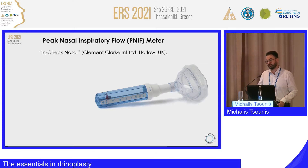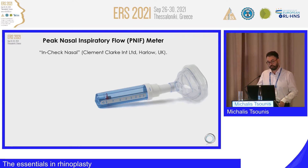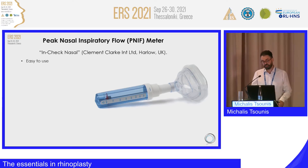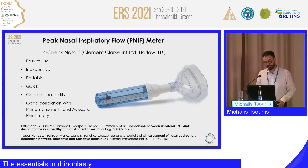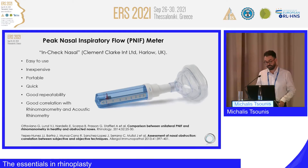Another device, less impressive but with important advantages, is the peak nasal inspiratory flow meter. It is very easy to use, cheap (about 35 pounds in the UK), portable, quick, and has good repeatability. According to recent studies, it has good correlation with rhinomanometry and acoustic rhinometry.